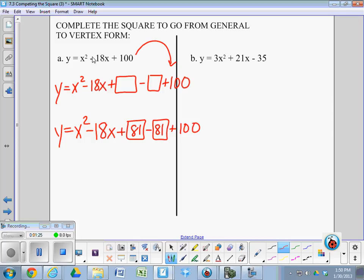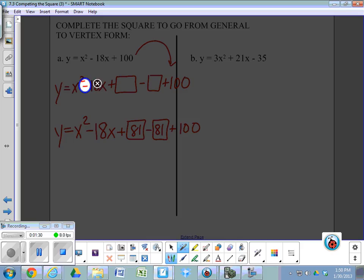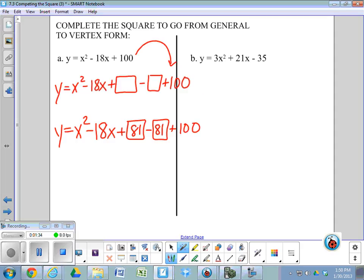For now, the fact that this was negative, this 18, didn't come into play yet. All right? It will in the next step when I create my perfect square part and my leftover part. Perfect square part goes in parentheses and gets squared. That's going to be the x minus h part of the vertex form.